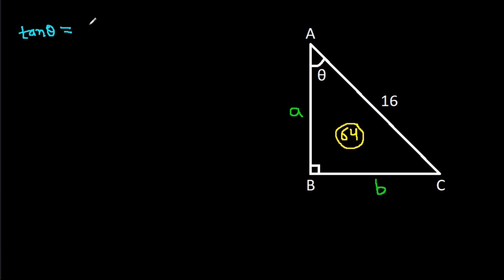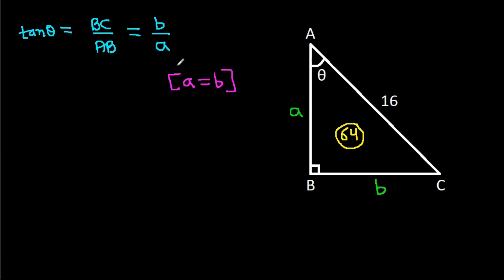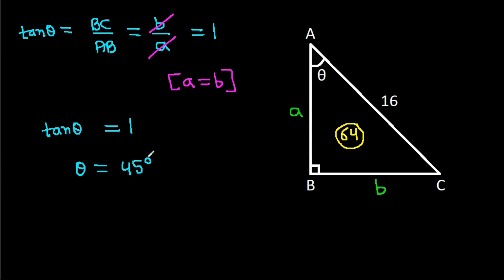Now, tan theta equals BC over AB, which is B over A. Since A equals B, they cancel, giving tan theta equals 1. Therefore, tan theta equals 1 means theta is 45 degrees.